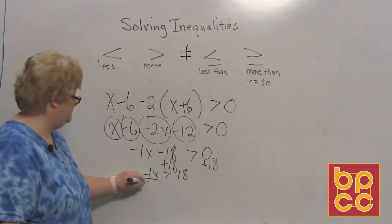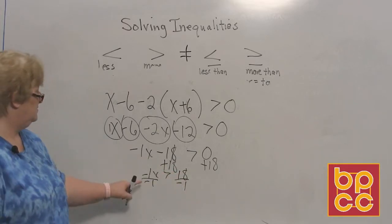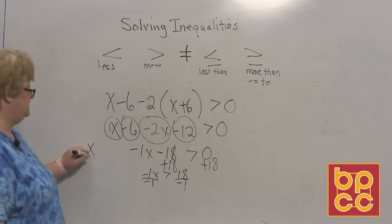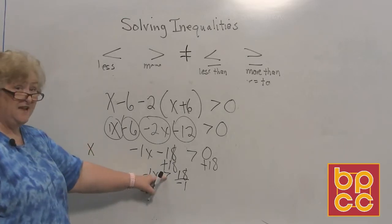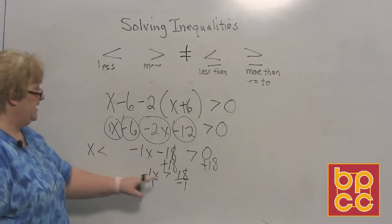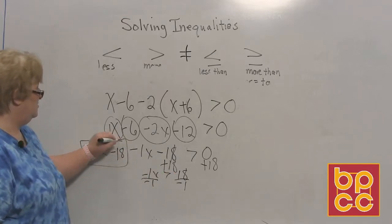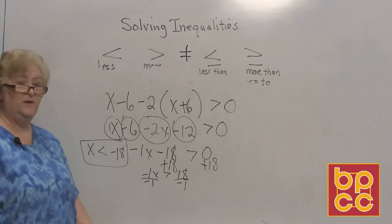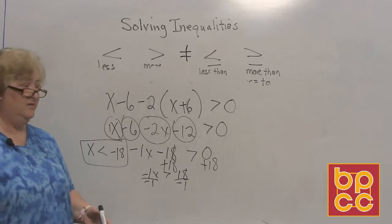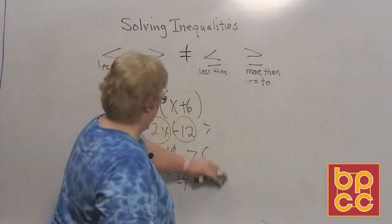Divide by negative 1. A negative into a negative is a positive, so we now have x. And since we divided by a negative, the sign has to change. A negative into a positive is a negative. So our answer is x is less than negative 18. We had to distribute, combine like terms, move numbers, and change the sign. A lot to be done, but you can do it.